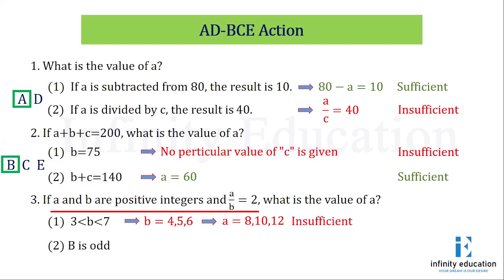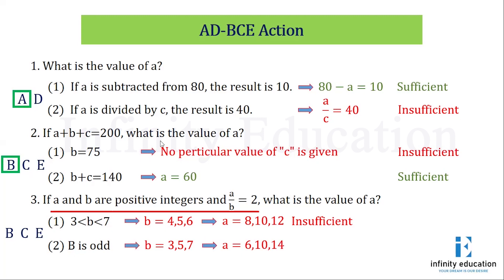If statement 1 is insufficient, I should write B, C, E. Now looking at statement 2, B is odd. If B is odd, B can be anything — 3, 5, and so on. Based on that, the values of A can be different. As we are getting different values of A, again it is insufficient.